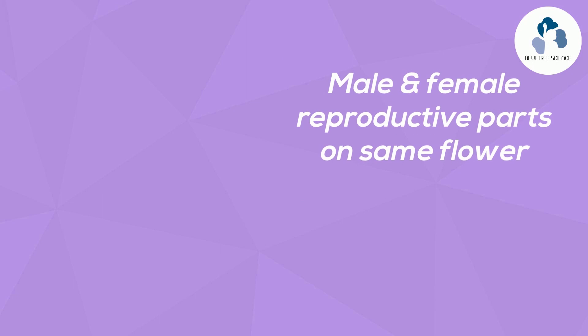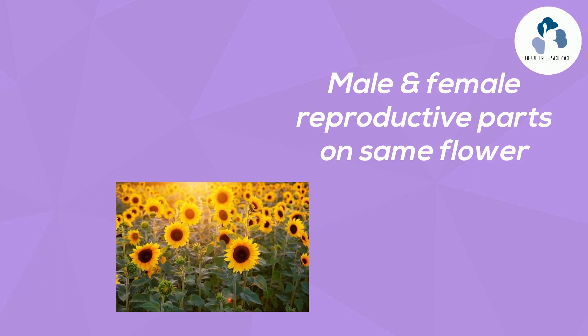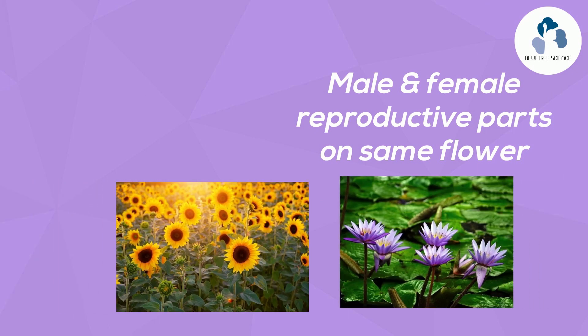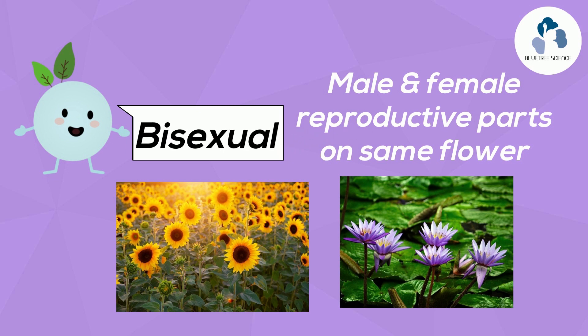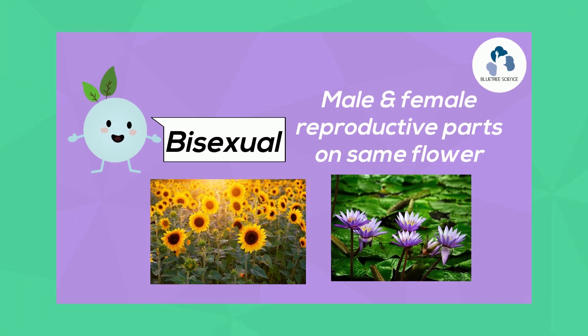Some flowering plants have both male and female reproductive parts found on the same flower, such as the sunflower and the lily. These flowers are called bisexual flowers.